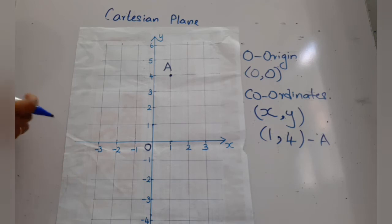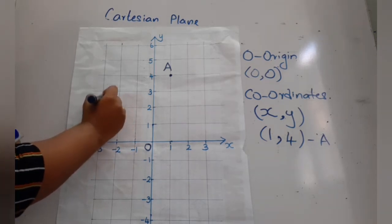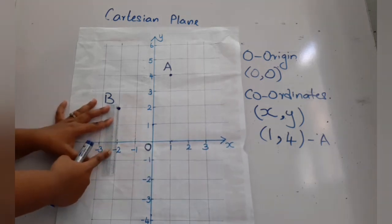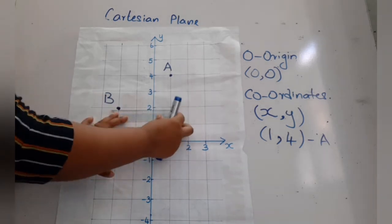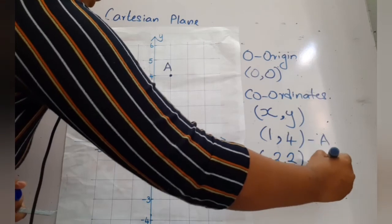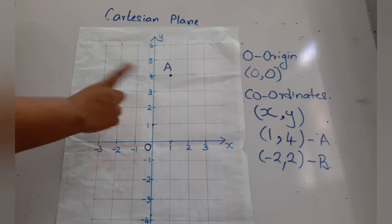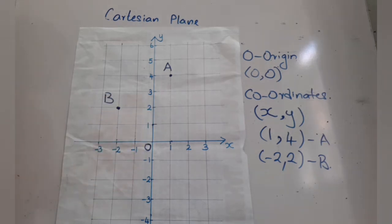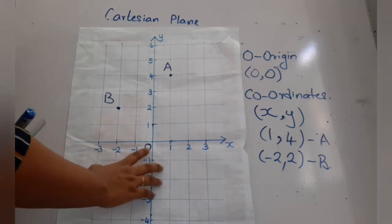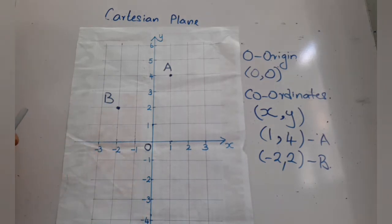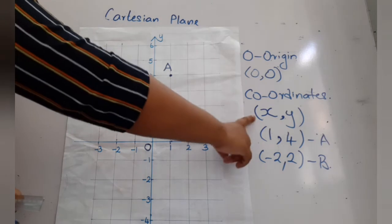Now let's take another point — point B. First we check the x-axis, which is negative two, and the y-axis belongs to positive two, so B is (−2, 2). You cannot change the order — if you mark y first it is wrong. Always mark the x-axis value first, then the y-axis value. So origin is (0, 0), the two axes are x and y, and points are marked relative to the origin using two numbers called coordinates.